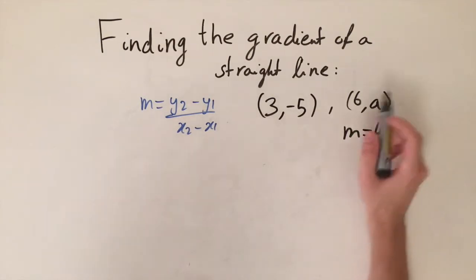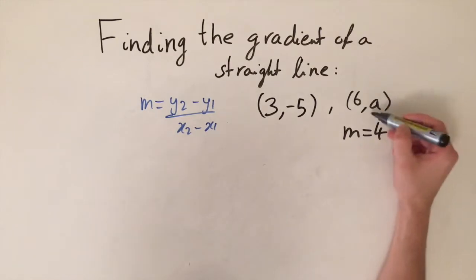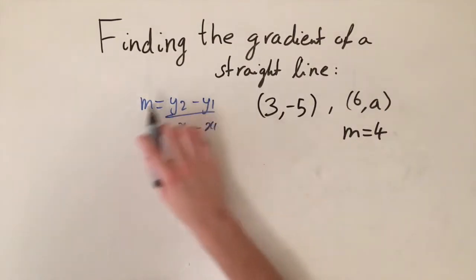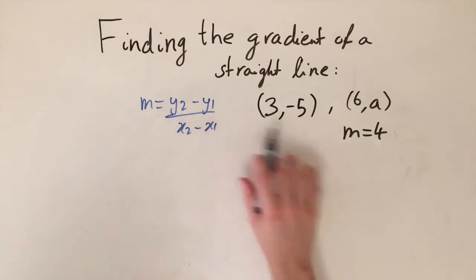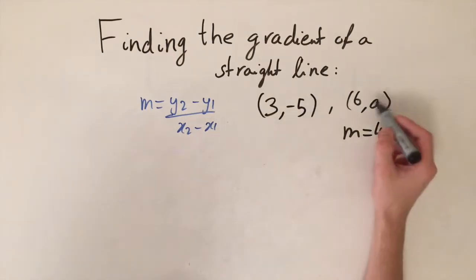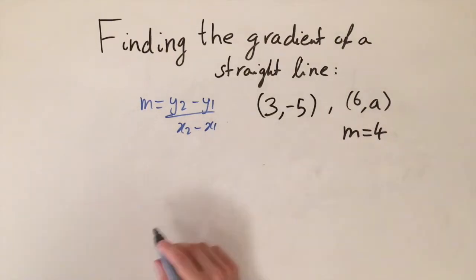So m is equal to 4, and we have these two points, and from this we need to work out what the constant value of a is. And it's quite simple—we just have to use this formula. So we're going to plug all the numbers in here and do some rearranging and hopefully find the value of a.